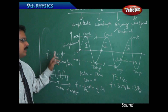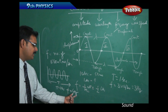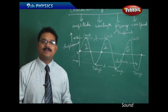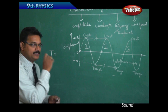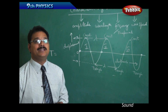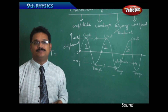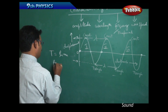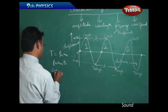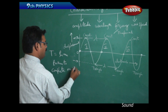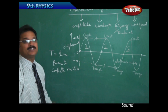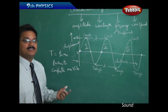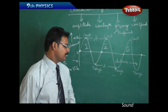Frequency is always the number of vibrations per second or number of waves per second, and the SI unit of frequency is Hertz. Now there is a relationship between frequency and time period. T is called time period and it is defined as the time taken to complete one full vibration — one oscillation, or one rotation. The unit of time is seconds.